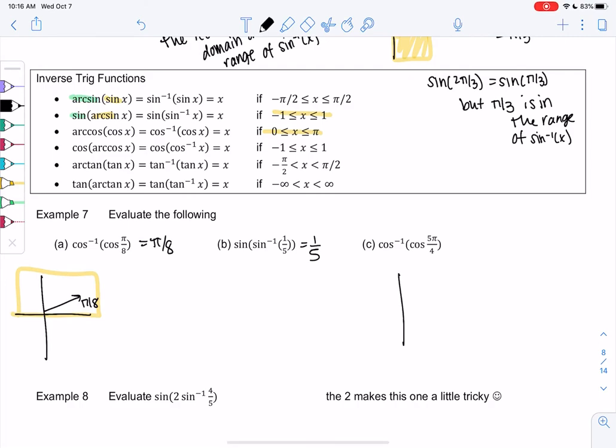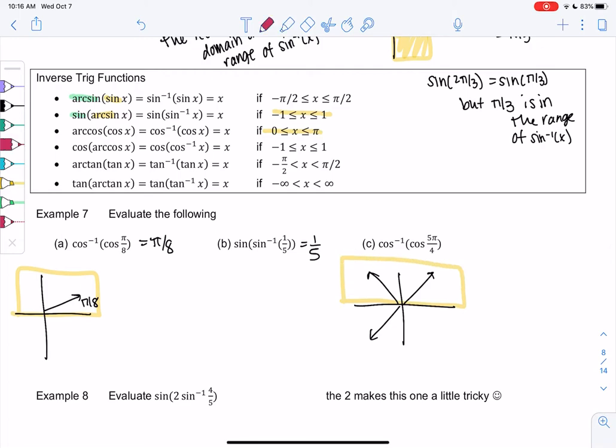And then our final one is cosine inverse of cosine of 5π over 4. This one has an issue. So we have π over 4, 3π over 4, 5π over 4 would be down here. The range for cosine inverse is only 0 to π. So we're going to find the angle in the top half that would have the same value. So I think my cosine value is negative root 2 over 2 for 5π over 4. So 3π over 4 has that same value. So if you draw the unit circle for these, it's not too bad.